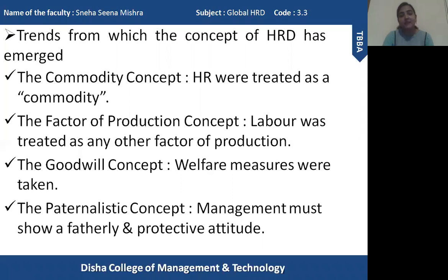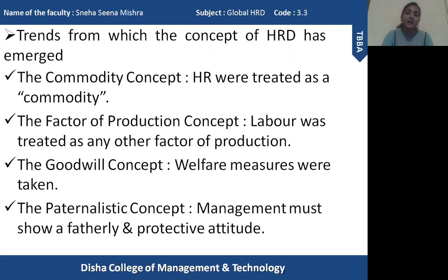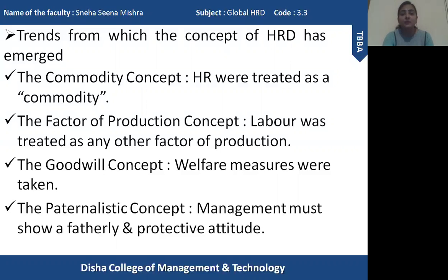Another concept that developed was the factor of production concept. In this, workers were treated like any other factor of production — like machinery and material. Workers were given a little bit more wages, but the condition was still the same. They were not given proper welfare measures, there was no security, they had no rights, and they were simply treated like machines. They were exploited — even with little wages, they had to work for many hours — so they were not treated properly.